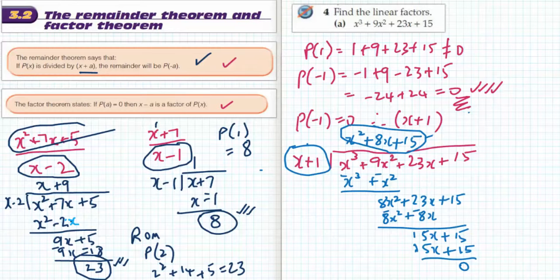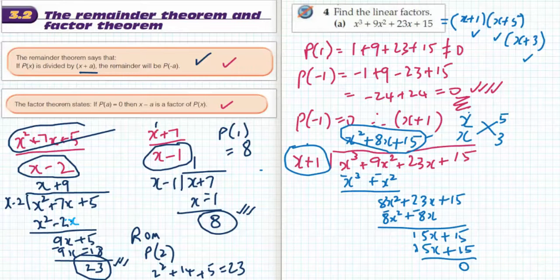And that quadratic can actually be factorised into the linear factors of x plus 5 and x plus 3. So I know that this is broken into the factors x plus 1, x plus 5, and x plus 3. Three linear factors that multiply to give you that cubic. In the next video I'm going to do some other examples at 3.2.